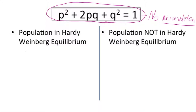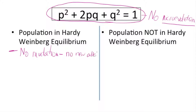for a population to remain in Hardy-Weinberg equilibrium, meaning there would not be any micro-evolution or changes in allele frequencies. The first condition is there cannot be any mutations in the DNA sequence — no changes from one allele to the next and no new alleles occurring because of random mutations. If a population is not in Hardy-Weinberg equilibrium, then mutations occurring would be one condition causing that deviation.